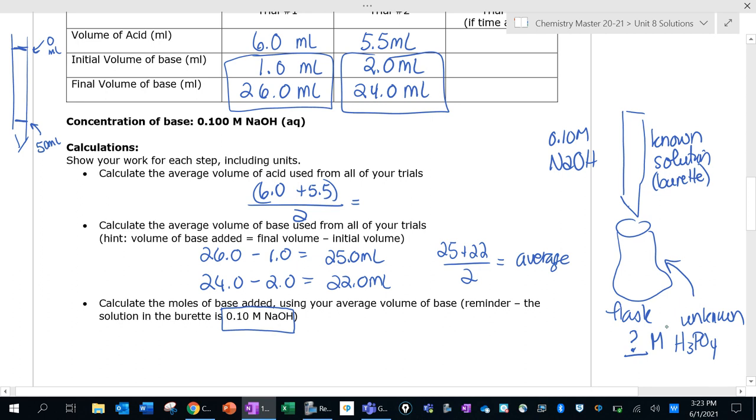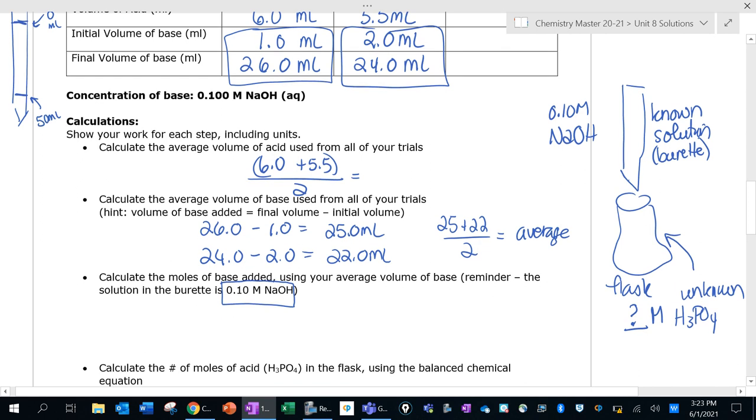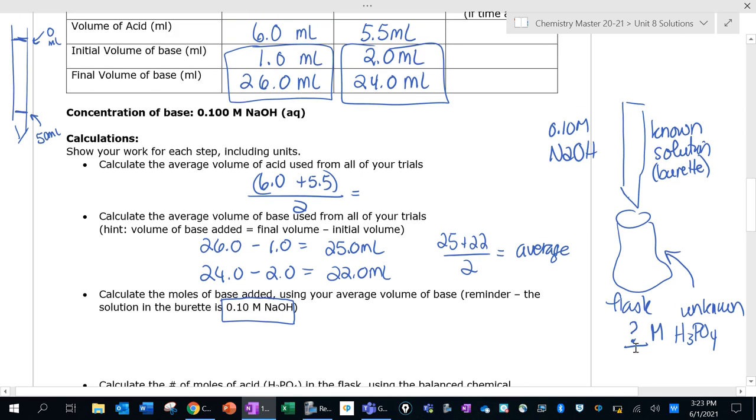Alright, so back to our steps in the calculation here. The first step to figure out how much acid we have is to figure out how much base it took to neutralize the acid. What we know is it took this volume. Let me actually stop and solve for this: 25 plus 22 divided by two is like 23.5 milliliters - that's my average volume of base. So we know it took 23.5 milliliters of 0.1 molar NaOH to neutralize our H3PO4.